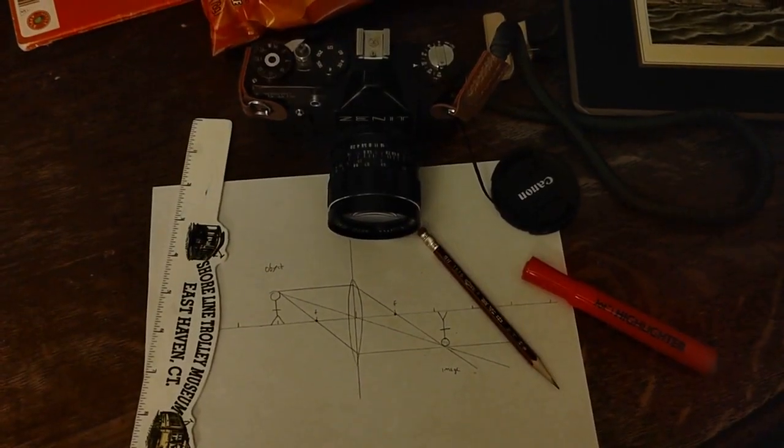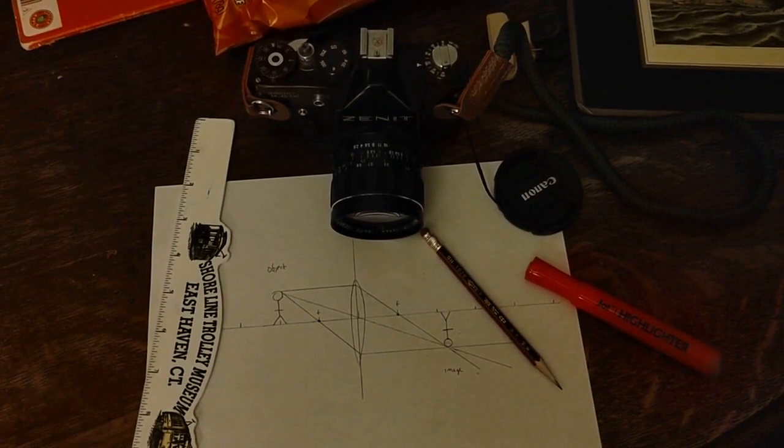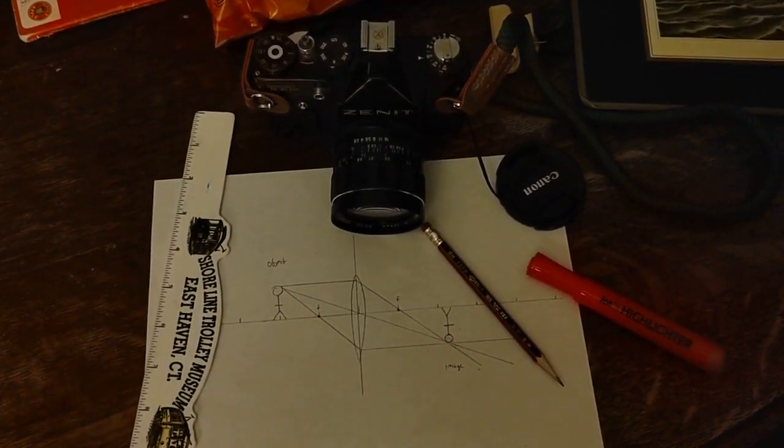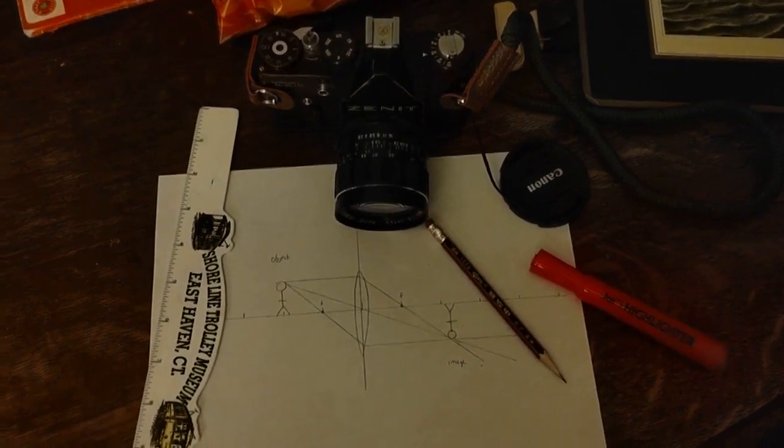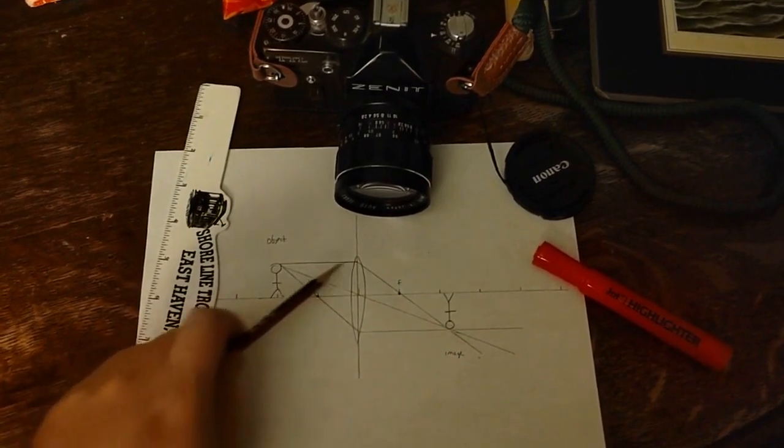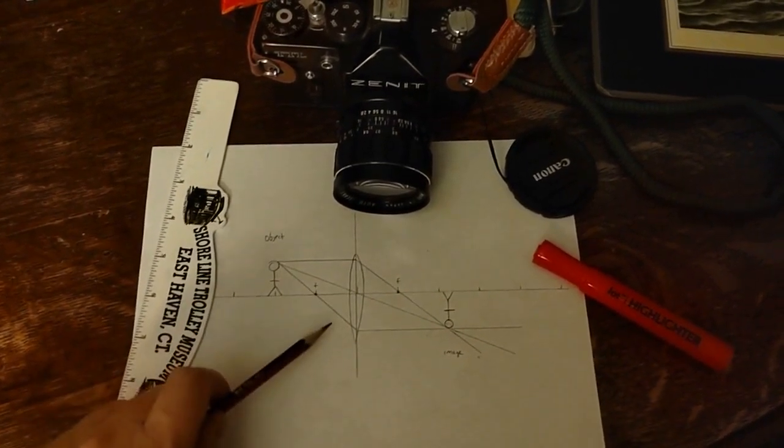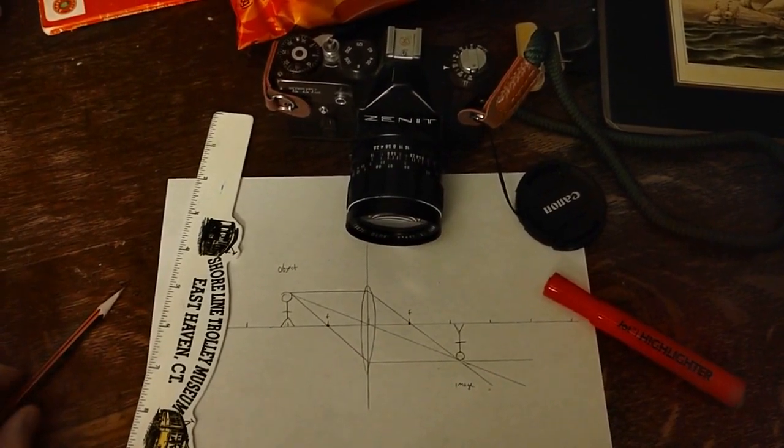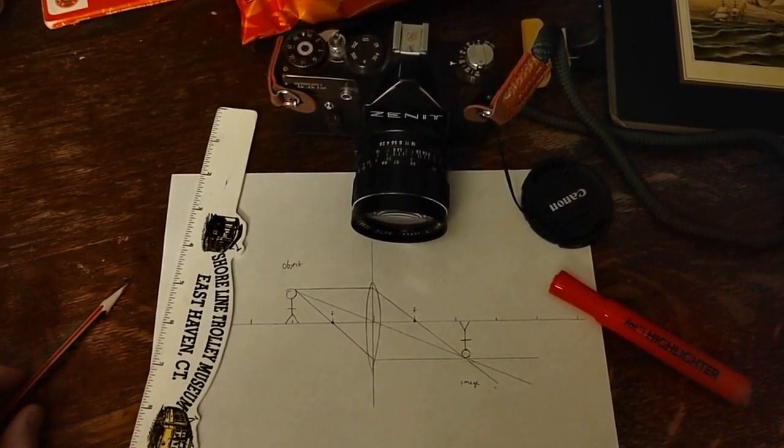One of the things that sometimes messes with people in ray diagrams is that although the principle rays are really important for locating an image, because we pretty much always can find them by doing our parallel, central, and focal rays, they're certainly not the only rays of light leaving the object that make the image.